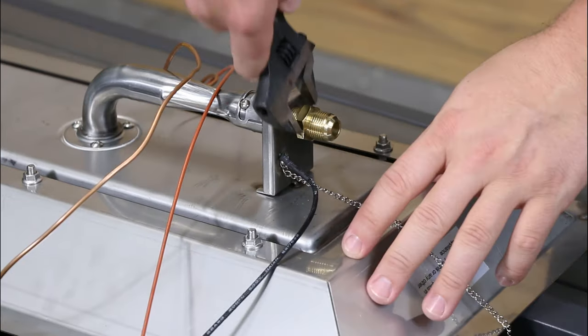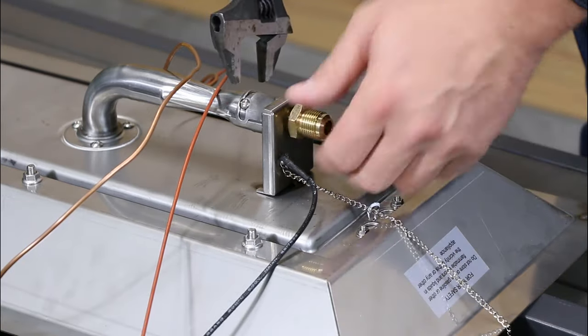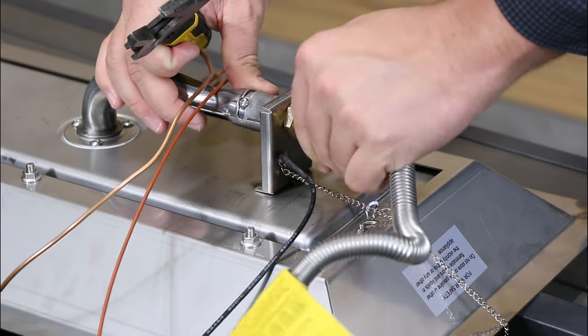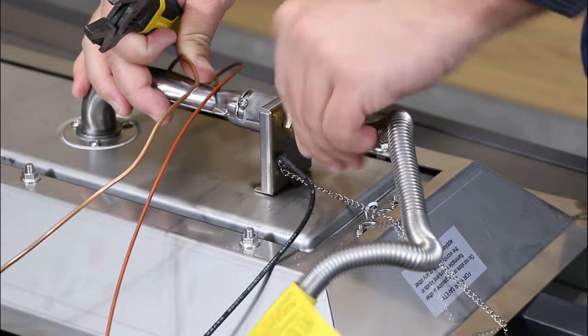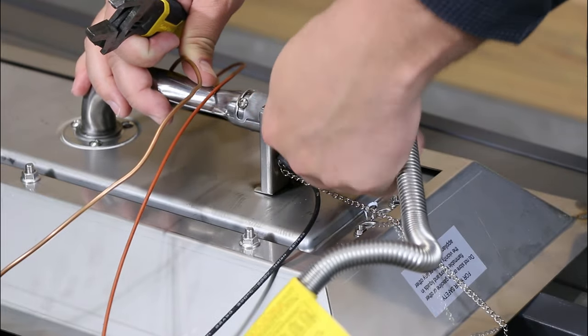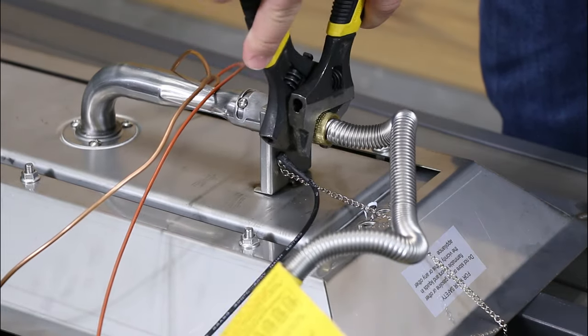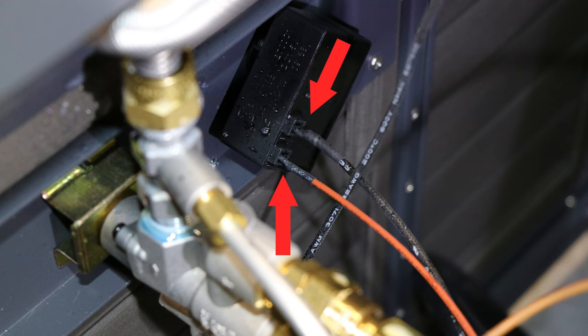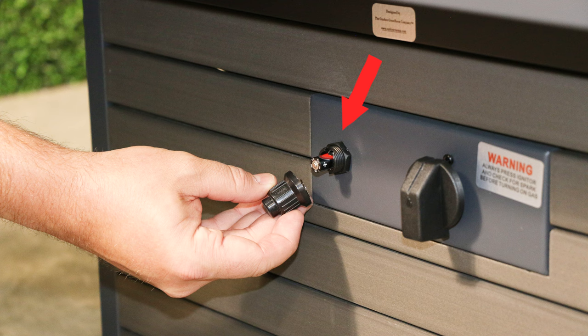Screw in orifice to orifice bracket and connect metal flex line using two wrenches to tighten the fittings. Check other gas connections to make sure they are tight at the valve. If tightening is needed, make sure to use two wrenches. Check the sparker connections from the burner to the sparker box. Make sure they are plugged in and the AAA battery is replaced.